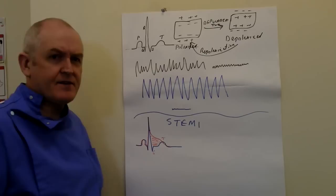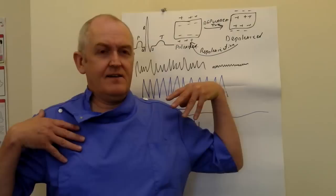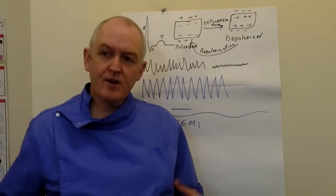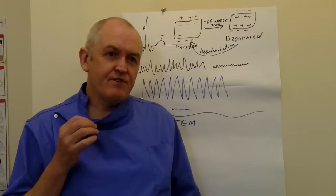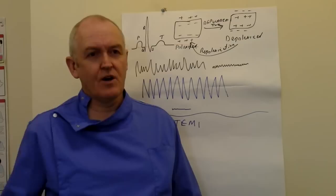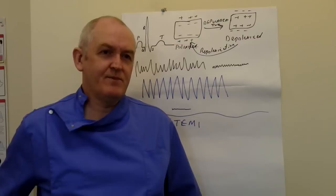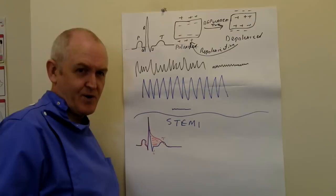You're looking at the heart from lots of different directions. The reason this works is that any electrical activity moving towards an electrode goes up, and any electrical activity moving away from an electrode goes down. So if you look at the different leads, you can work out which part of the myocardium is affected. It takes a bit of practice.